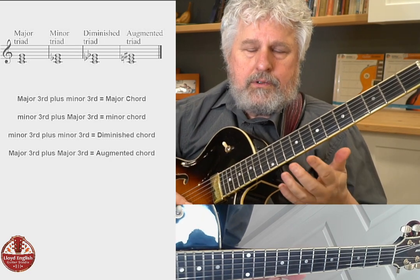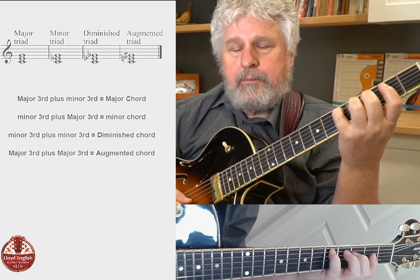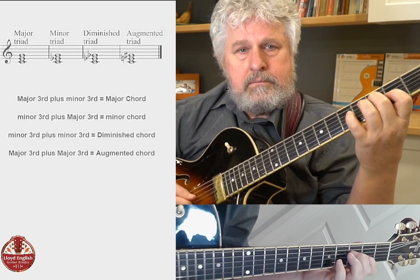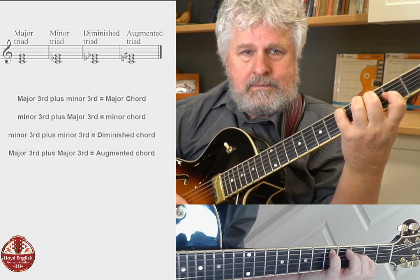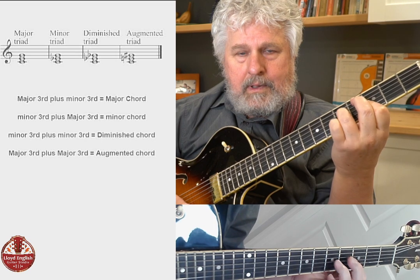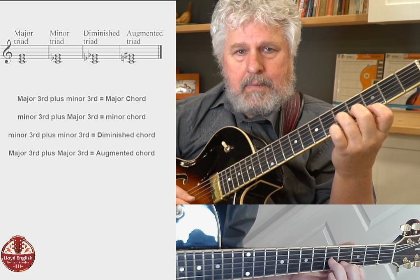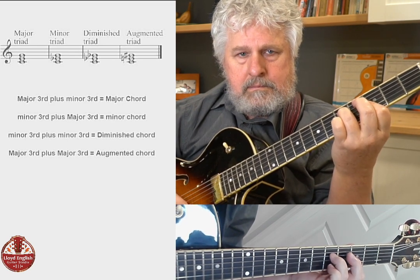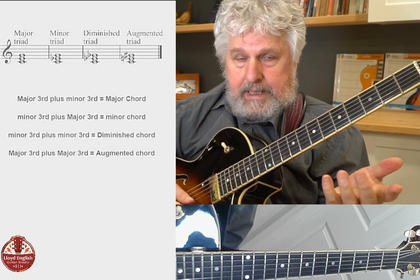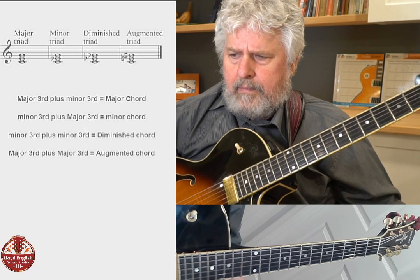Now let's change each of those chords to a minor chord. We take the major third and make it a minor third. To spell a minor chord in root position, it's a minor third plus a major third. So: a major chord in root position, with the root naming note in the lowest voice, is a major third plus a minor third. A minor chord is a minor third plus a major third.